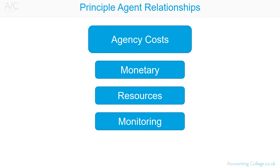Agency costs are borne by the principal and fall under the cover of operating costs. Agency costs can be viewed in monetary terms — for example, director incentive schemes and remuneration packages. In resources consumed terms — for example, directors' use of company assets. Or in time taken in monitoring terms — for example, principals having to attend meetings.